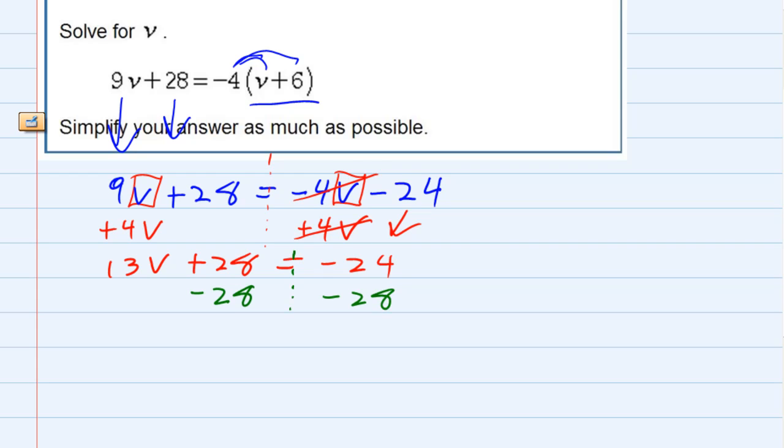Again, I gotta do it to both sides. On the left they cancel, leaving me with just 13v equals. On the right hand side they're both negative, so I'm gonna have to add and keep the sign, and I get negative 52.